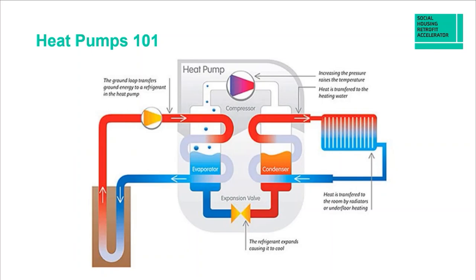In the condenser — the second heat exchanger — we transfer the thermal energy into the household systems: radiators, underfloor heating, or a hot water cylinder. This cools the refrigerant. Then at the bottom we take the pressure off in the expansion valve and the refrigerant returns to a liquid state — a continuous cycle. The compressor runs when the house is calling for energy, and stops when there's no demand.